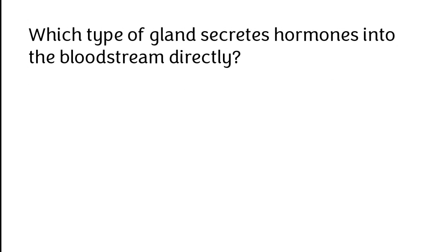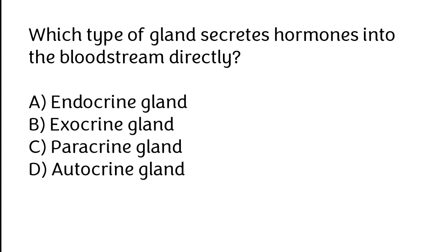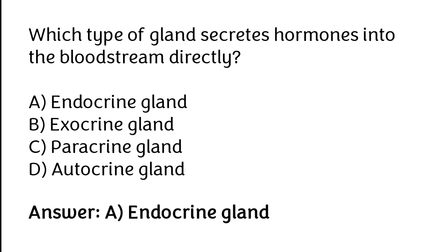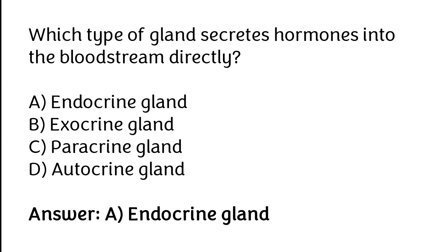Which type of gland secretes hormones into the bloodstream directly? Endocrine gland, exocrine gland, paracrine gland, autocrine gland. The correct answer is option A: endocrine gland is the type of gland which secretes hormones into the bloodstream directly.